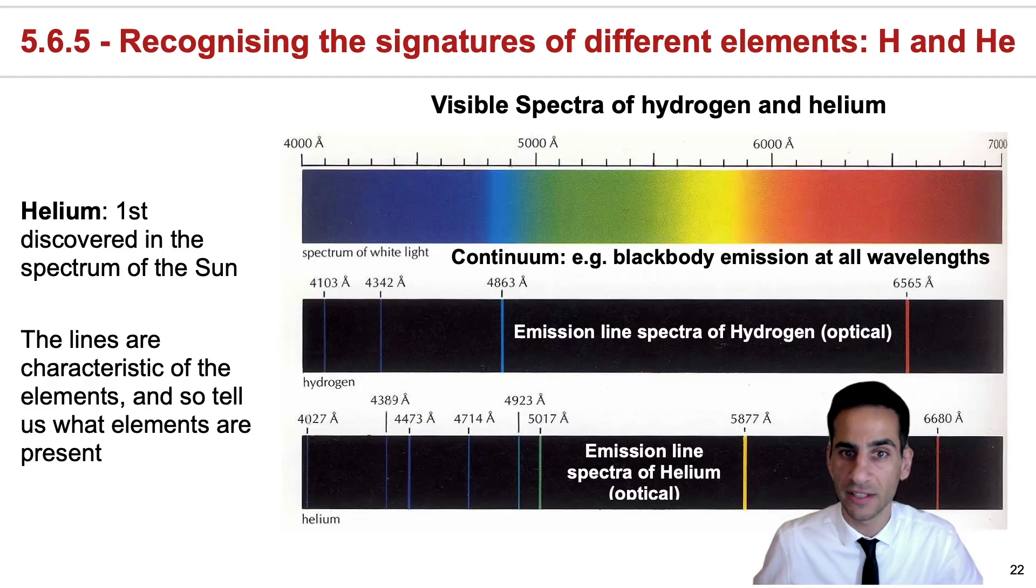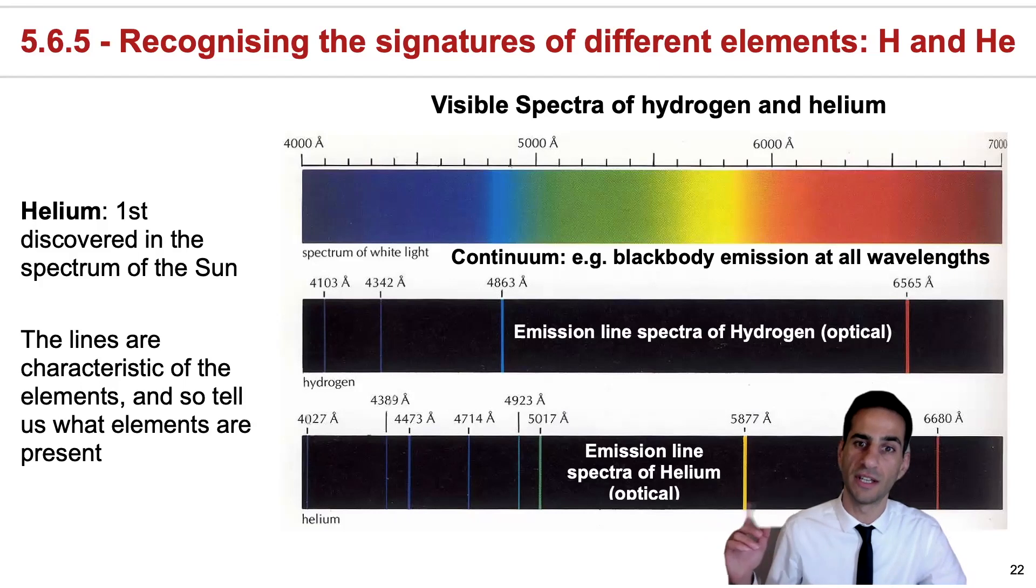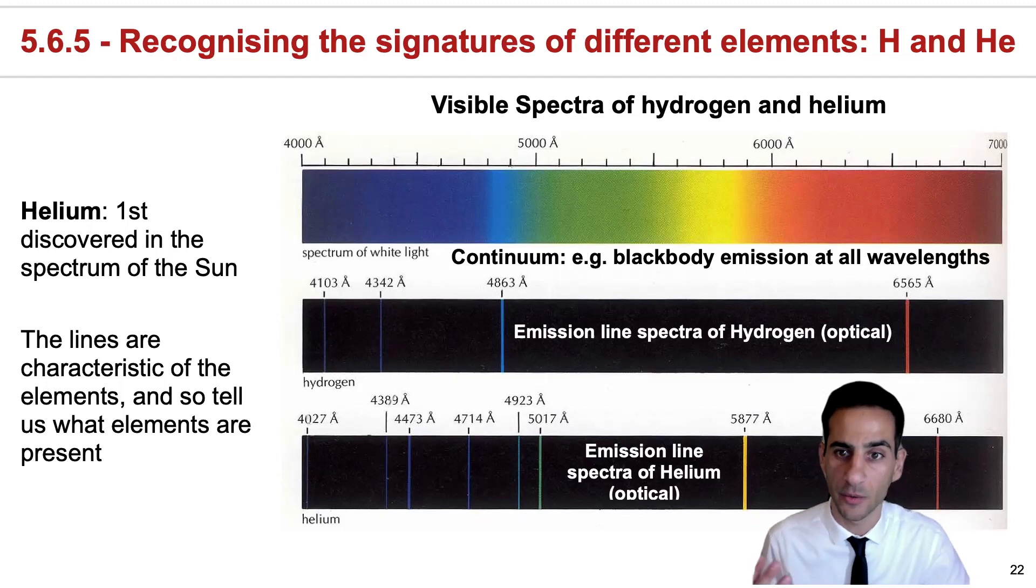And if we go to the second most complicated atom, helium, then instead of just finding three lines in the optical spectrum, you find many more, as you can see in my background. But you'll notice that they're all at different wavelengths when compared to hydrogen. And therefore, we can very easily identify when we're in the presence of helium.